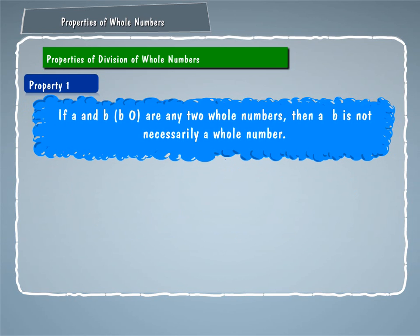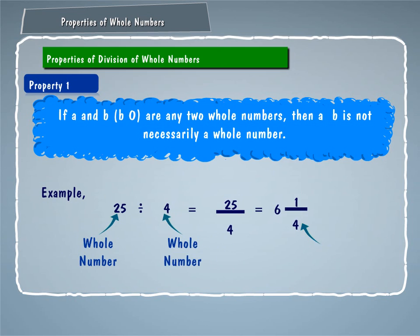Property 1. If A and B, where B is not equal to 0, are any two whole numbers, then A divided by B is not necessarily a whole number. For example, 25 divided by 4 doesn't give a whole number.